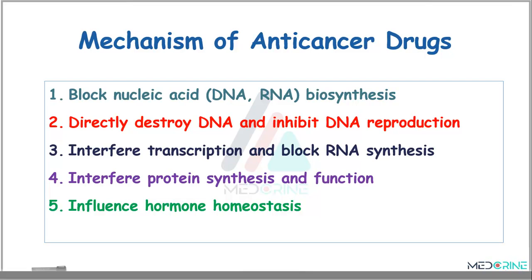What is the mechanism of anticancer drugs? Anticancer drugs can work based on five different mechanisms: they can block nucleic acid — that is DNA or RNA — biosynthesis; they can directly destroy the DNA, inhibiting DNA reproduction; or work by interfering with transcription and blocking RNA synthesis; or interfering with protein synthesis and its function; and lastly, these anticancer drugs can work by influencing hormone homeostasis.